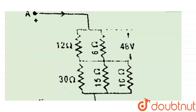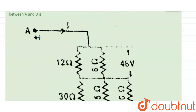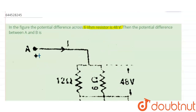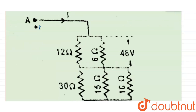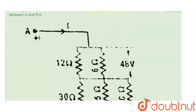As you can see in this figure, there are two points A and B. A is on the positive side and B is on the negative side. The potential difference across the 6 ohm resistor is 48 volts, and current is flowing in this direction.